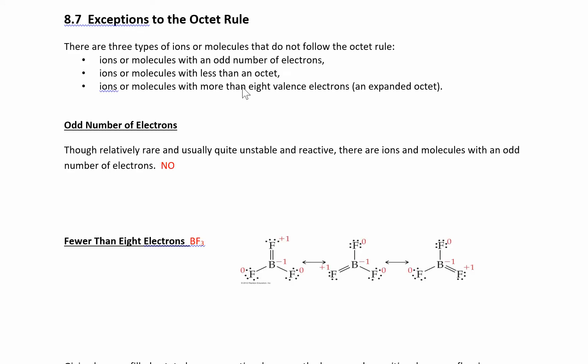Now we can look at some exceptions to the octet rule. So we said the octet rule is when you'd like to have eight electrons around each atom. Some things violate the octet rule.